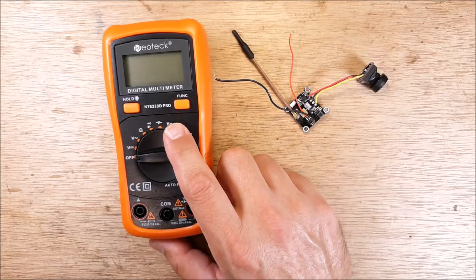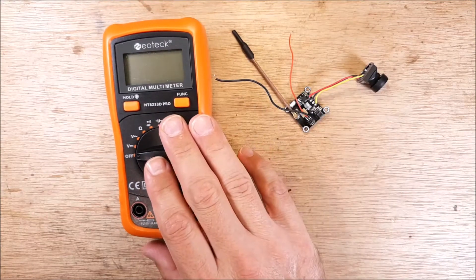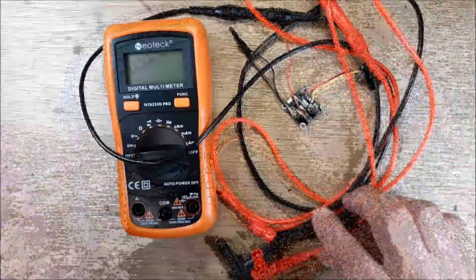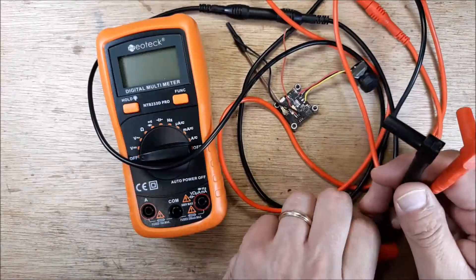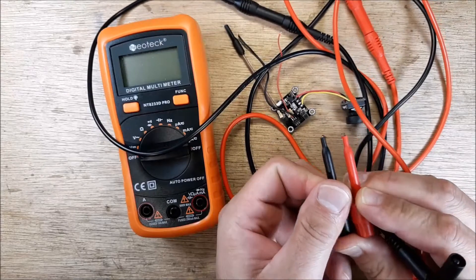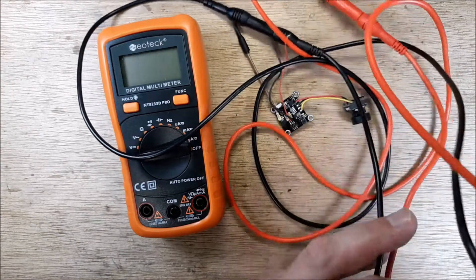To do an amp test, you're going to need some things. You're obviously going to need your meter, but you're also going to need this wiring here. You're going to need a way to plug it into your meter and then you're going to need a way to grab hold of the wires that you're going to work with.